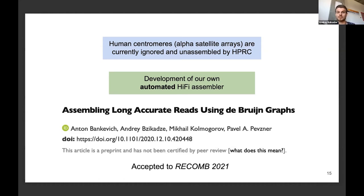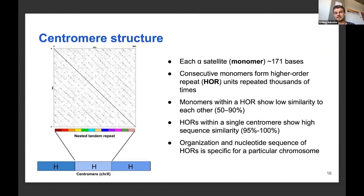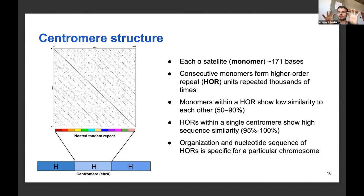Human centromeres are not unlike the tandem repeats Elena was talking about, but much longer — up to several megabase pairs. The repeat units are alpha-satellites, which are 171 base pairs long, and consecutive monomers form higher-order repeats (HORs) that are repeated thousands of times. The monomers inside an HOR are not very similar to each other, but different HORs are very similar — sometimes identical — creating very long nested tandem repeats on each chromosome.